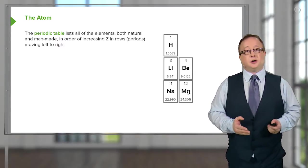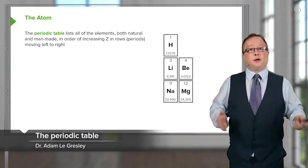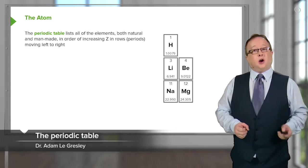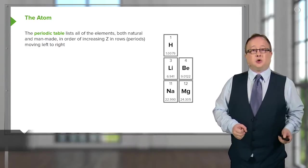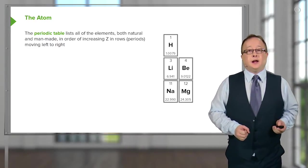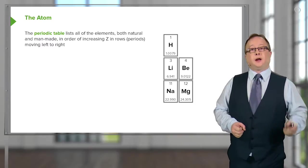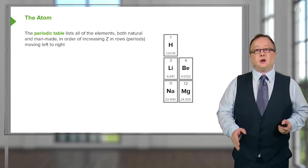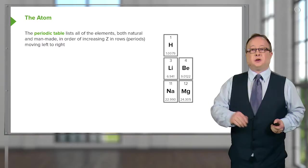Now, you've probably all heard, or I hope you've all heard, of the periodic table. It lists all of the elements, both natural and also man-made, in increasing order of atomic number, Z, moving from left to right.